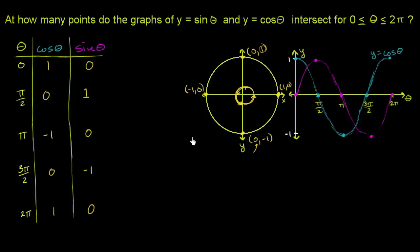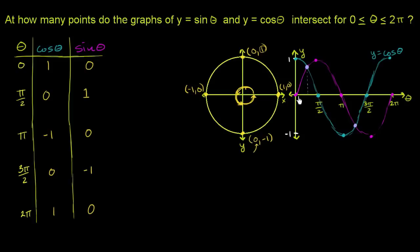Visually, we can think about how many points the graphs of y equals sine theta and y equals cosine theta intersect for theta between 0 and 2π. Looking at the graph, there are two points of intersection — one between 0 and π/2, and one between π and 3π/2. These are cyclical graphs; over the full 2π range, you get exactly two points of intersection.